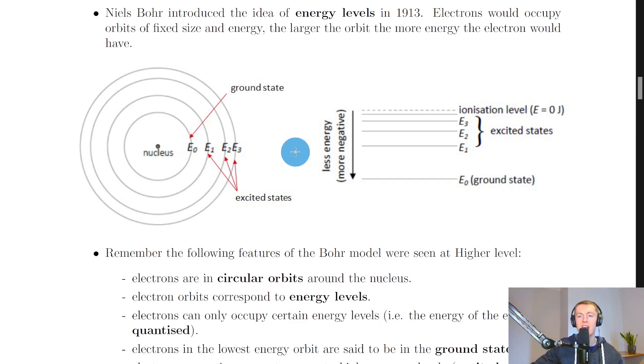And he then decided to think about these energy levels in a more kind of straight or linear form with this kind of ladder structure shown on the right here. So here we've got less energy i.e. decreasing energy going down the way where we've got the ionization level at the top which is thought to be at E equals zero joules and then we have some excited states and then the ground state E0 down the bottom.